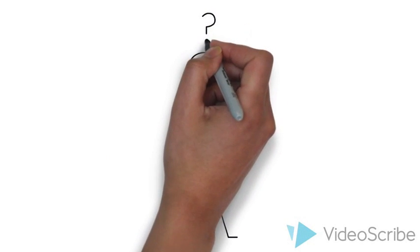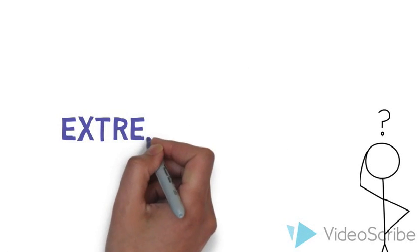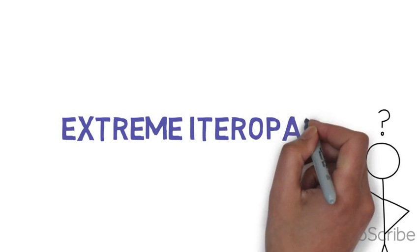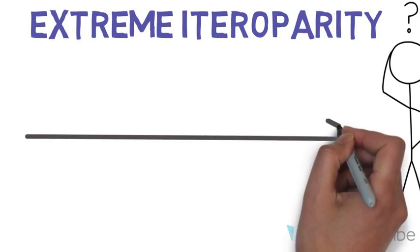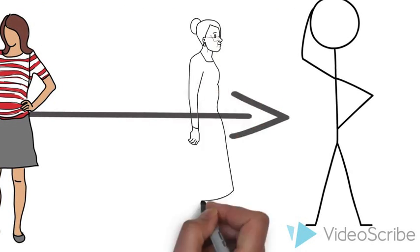So how does this all relate to why humans live so long after we reproduce? Well, humans are a case of extreme iteroparity, meaning that we produce over a long period of time and live long after we reproduce.